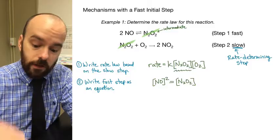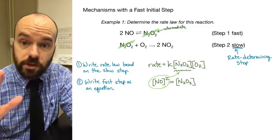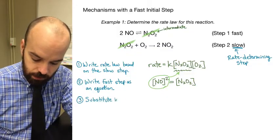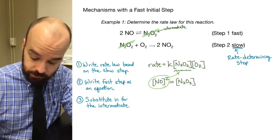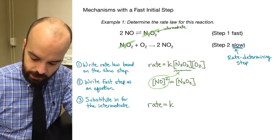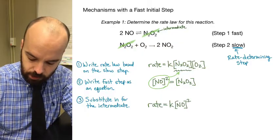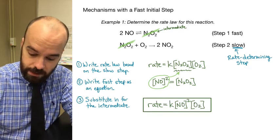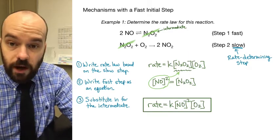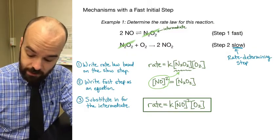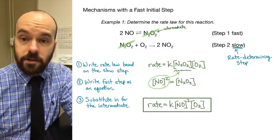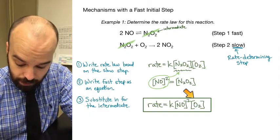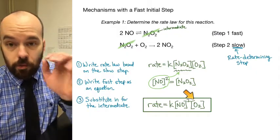Now we substitute [NO]² in for [InO₂] in our rate law and rewrite it. We get rate equals k times [NO]² times [O₂]. Both NO and O₂ appear in the overall reaction — neither is an intermediate — so this is our final rate law for this mechanism.